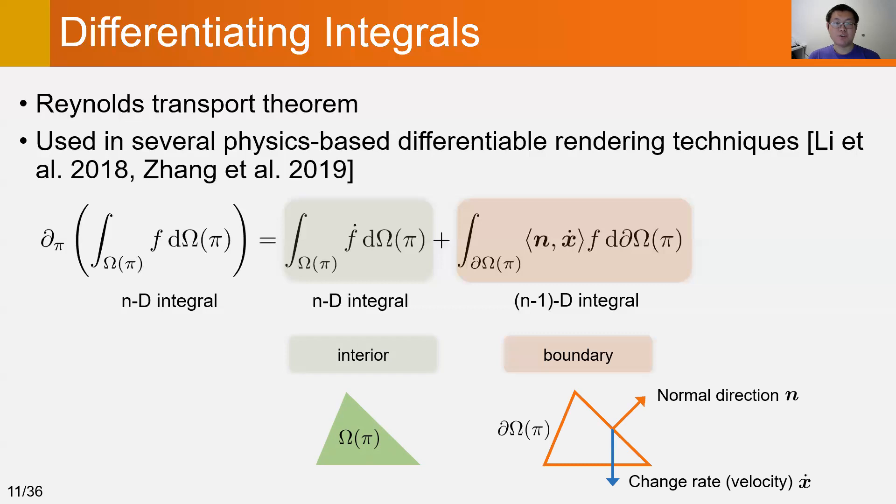The second term with the orange color is the boundary integral. We call it the boundary term. The integrand of the boundary term is the product of the original function and the dot product